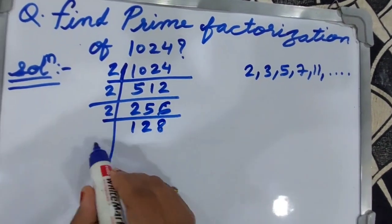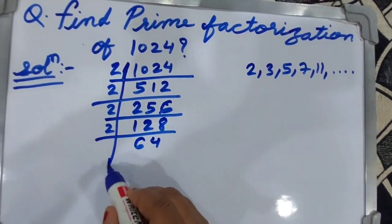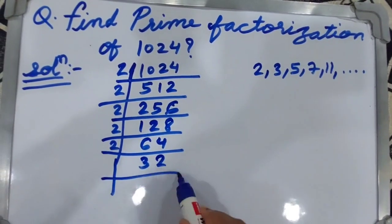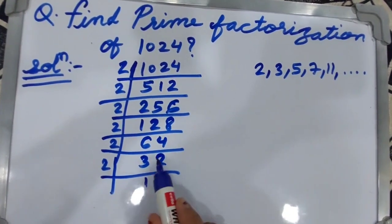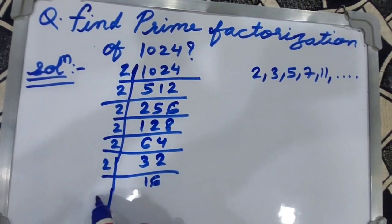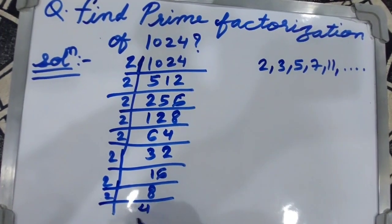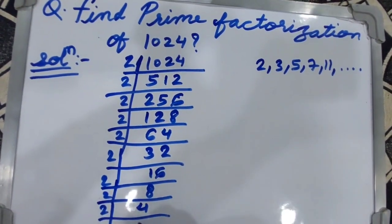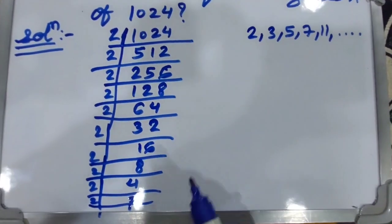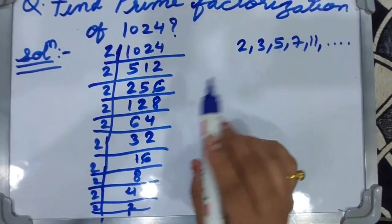Then two eights are sixteen. Two sixes are twelve, two fours are eight, two twos are four, two ones are two. It will be completely divisible by two. Then you can find the prime factorization of 1024.